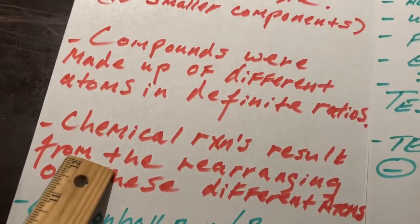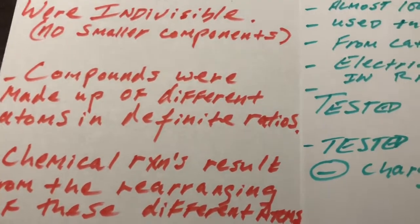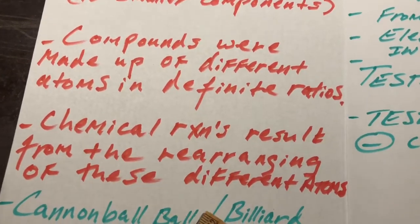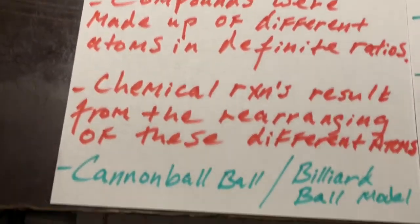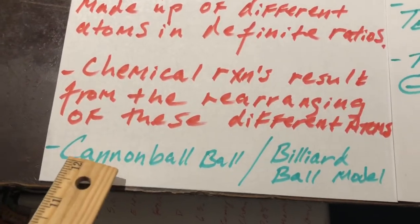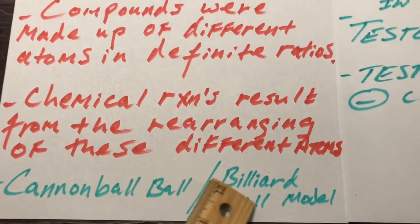He also said in his theory, in terms of chemical reactions, the formation to form compounds and so on, there's a rearrangement of these different atoms to produce new things. And his model of the atom was the cannonball, compared to the cannonball, or sometimes called the billiard ball model.